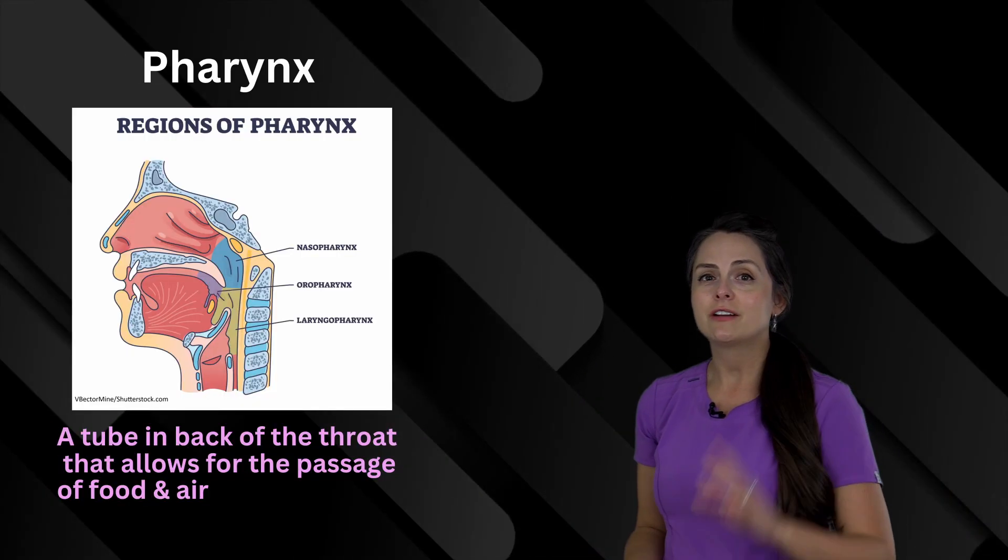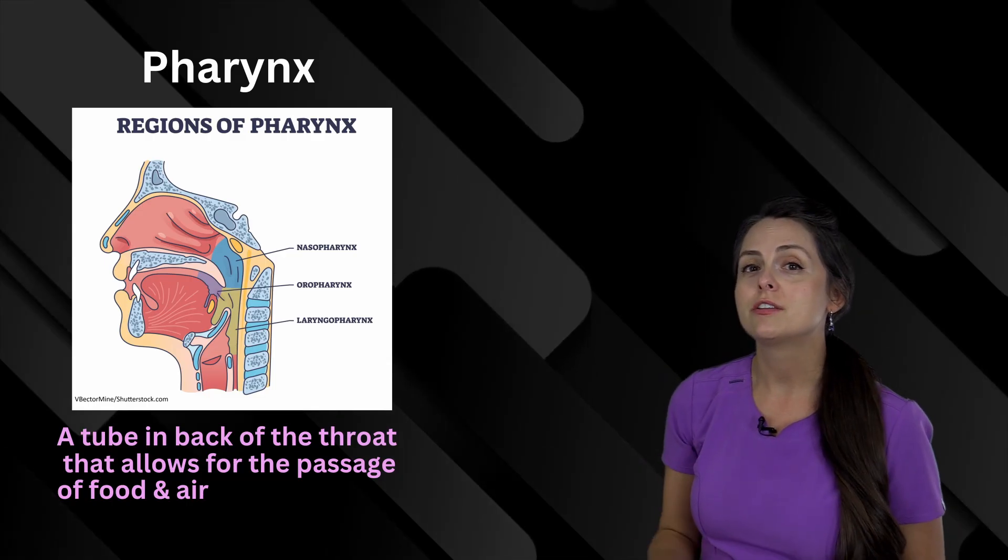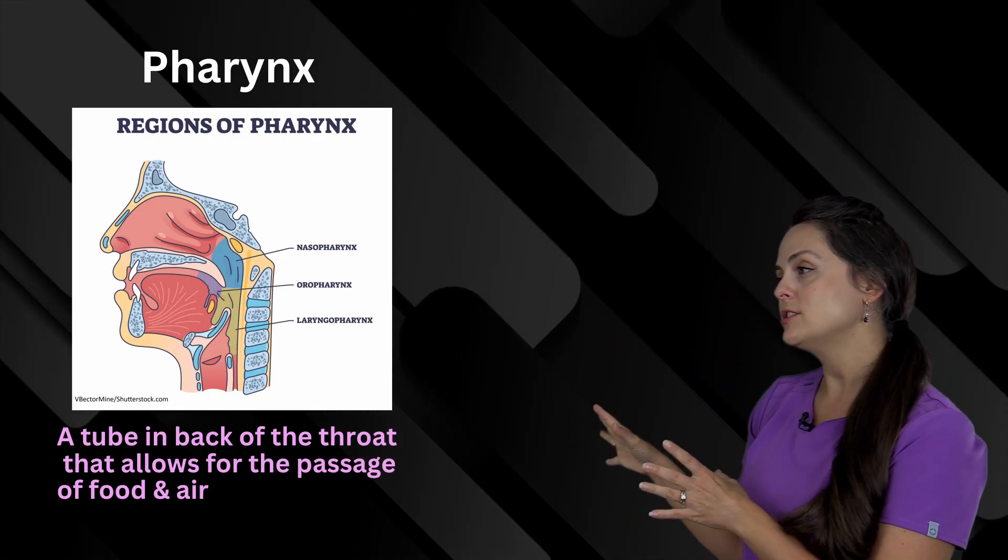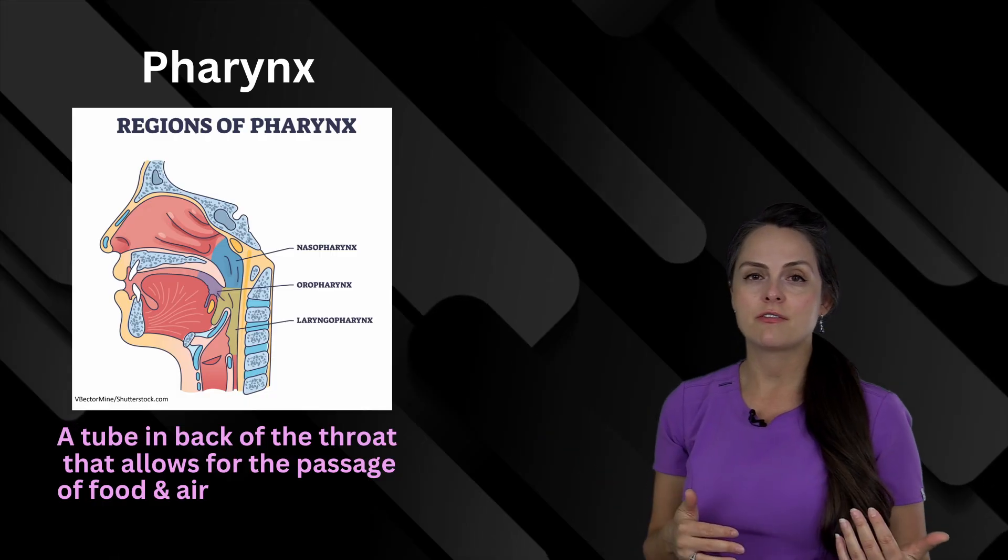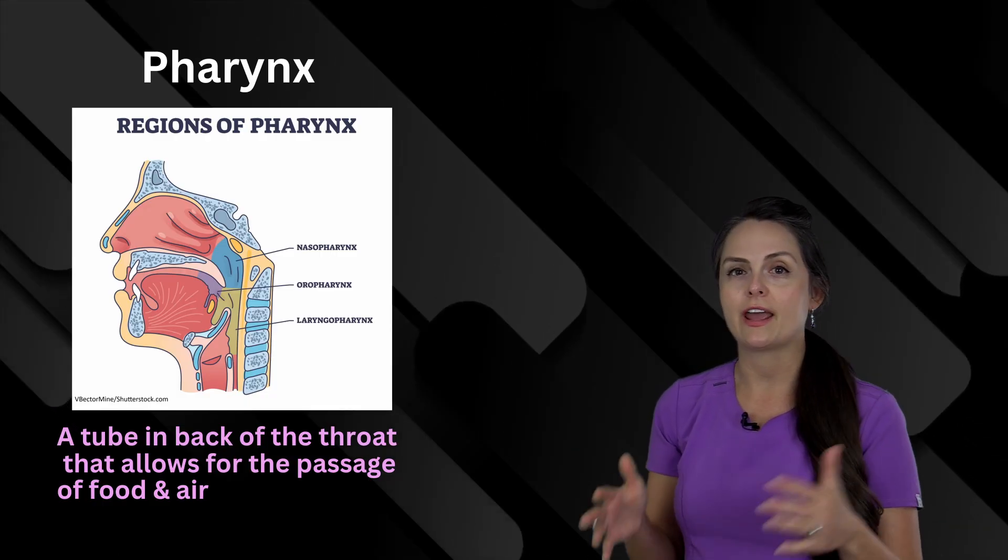Then there's another word which is very similar to the one we just went over called the pharynx, and this is the throat region that is behind the nose and the mouth and allows for passage of food, liquid, and air.